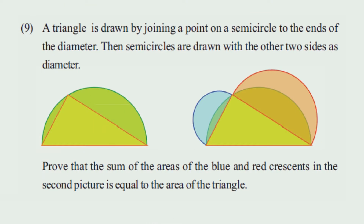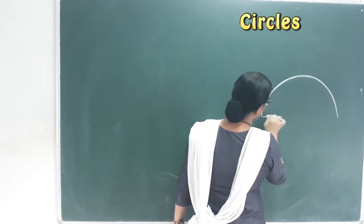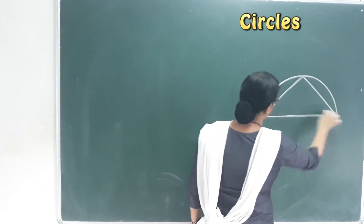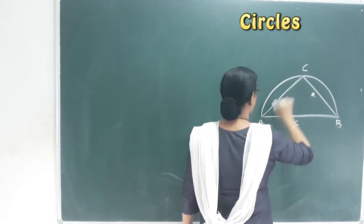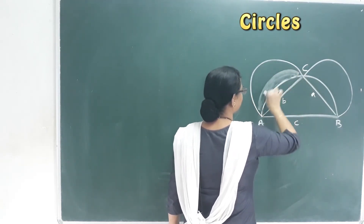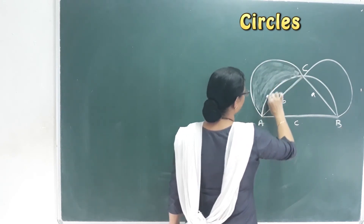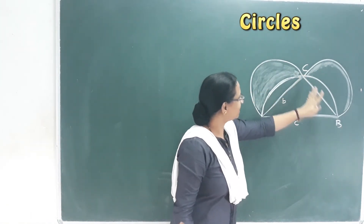A triangle is drawn by joining a point on a semicircle to the ends of the diameter. Then semicircles are drawn with the other two sides as diameters. Prove that the sum of the areas of the blue and red crescents equals the area of the triangle. In this semicircle there is a right triangle ABC. The crescent is the part at the center.